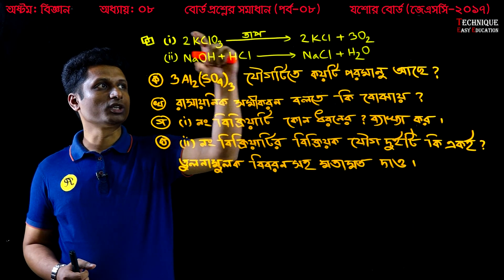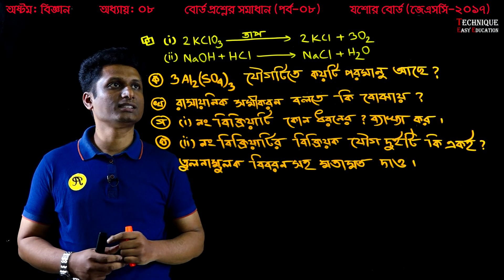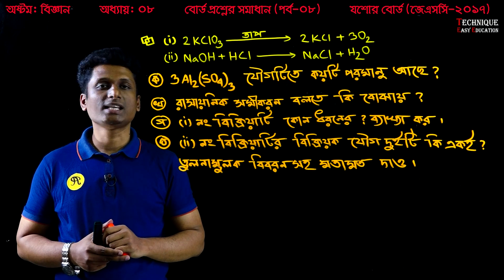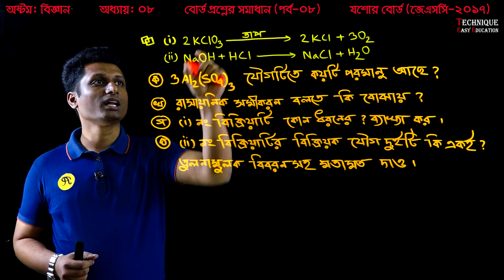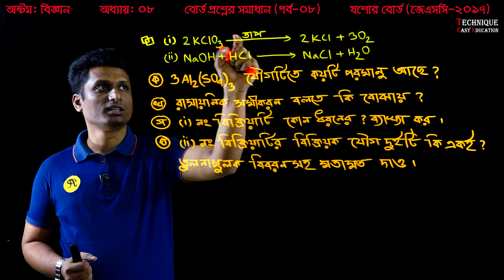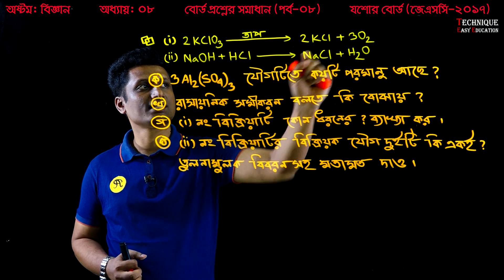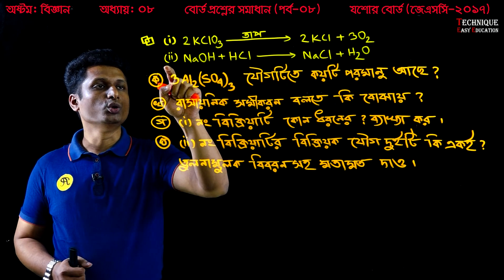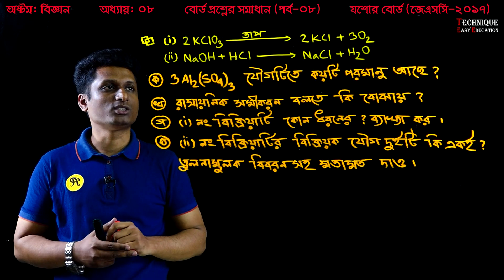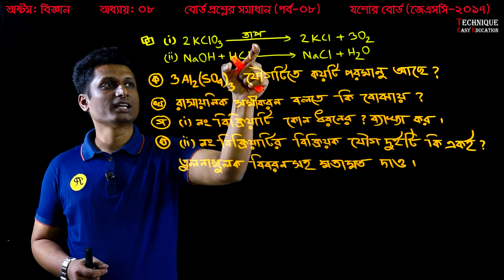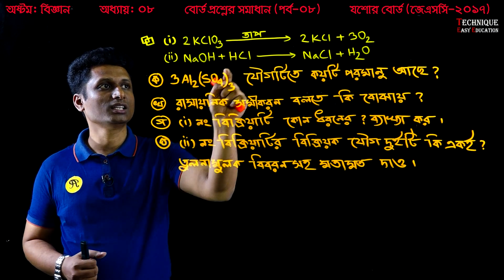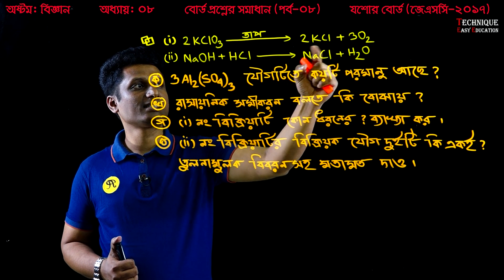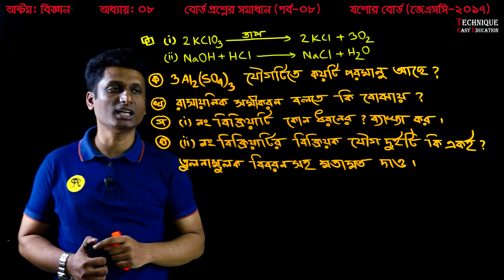As you can see, there are two types. The first one is KClO3 — potassium chlorate. What is KCl? Potassium chloride, or oxygen. The second one is NaOH, or sodium hydroxide. This is HCl, or hydrogen chloride. What is NaCl? NaCl is sodium chloride, or H2O — water.